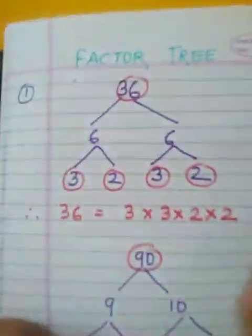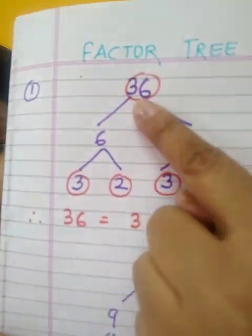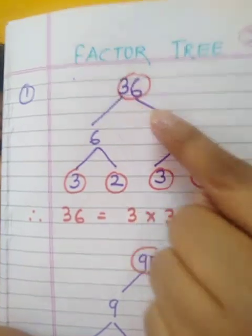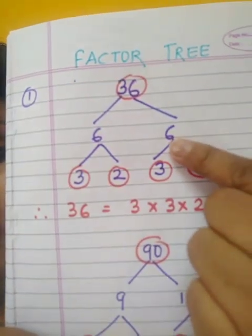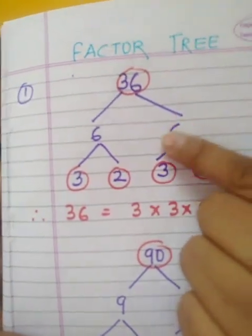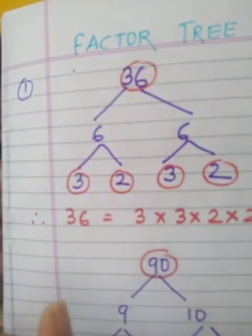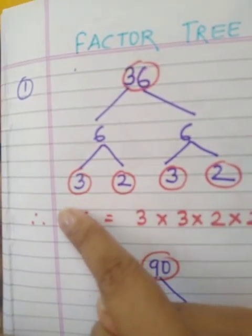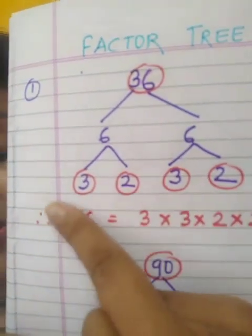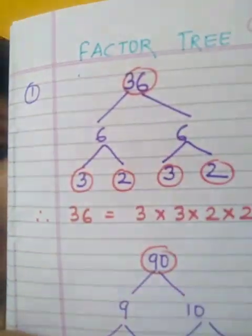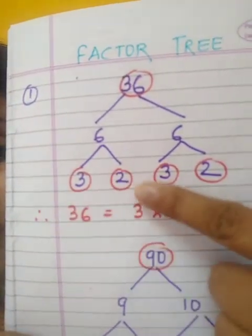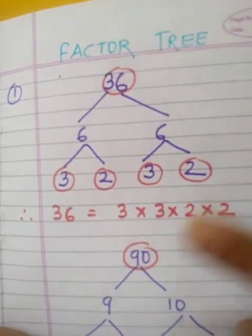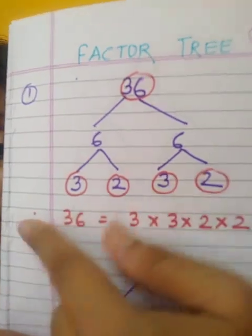We are going to make a tree. Suppose we want to find the factors of 36. We will write the numbers which divide 36 — like 6 × 6 = 36. 6 and 6 are of course not prime numbers, but we are going to find other factors until we get prime numbers. We will further divide 6 into 2 factors: 3 × 2 = 6 and 3 × 2 = 6. We have to continue till we get prime numbers. Here we stop because all the numbers we have got are prime numbers — 3, 2, 3 and 2. Arrange them in proper order, and if you multiply these prime numbers, you will get 36.